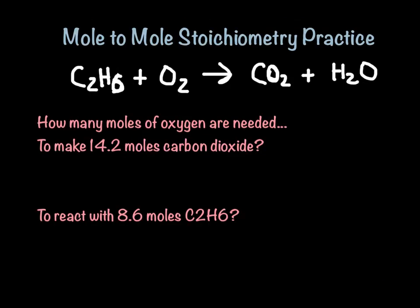Here's a combustion reaction that we have to do some action lines on. First, you notice there's a problem — it's not balanced. So we're going to balance it right now. I had to double all the coefficients because the oxygens were even on one side and odd on the other. Now it's balanced. Remember, these are mole ratios: two moles of C2H6 react with seven moles of O2 to make four moles of CO2 and six moles of H2O. The mole ratio of C2H6 to CO2 would be two to four, and it doesn't matter which side of the arrow you're on — they're all mole ratios.